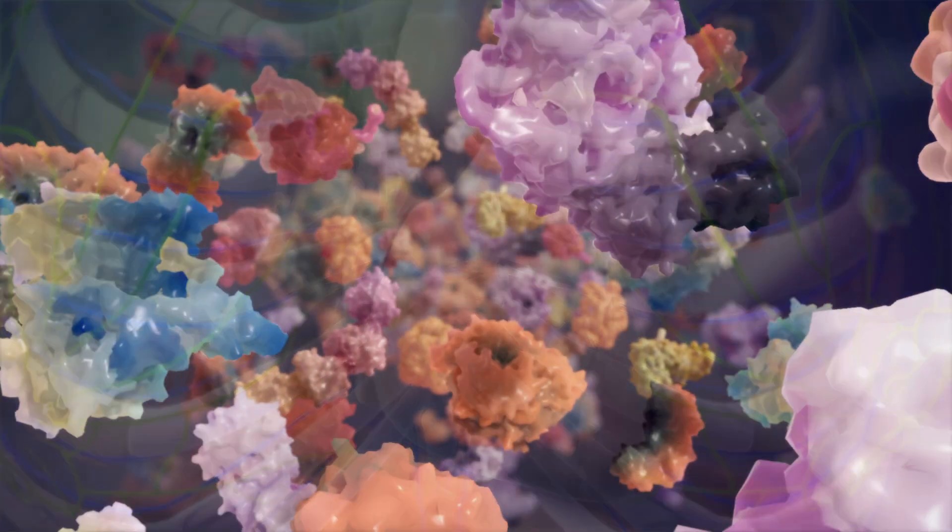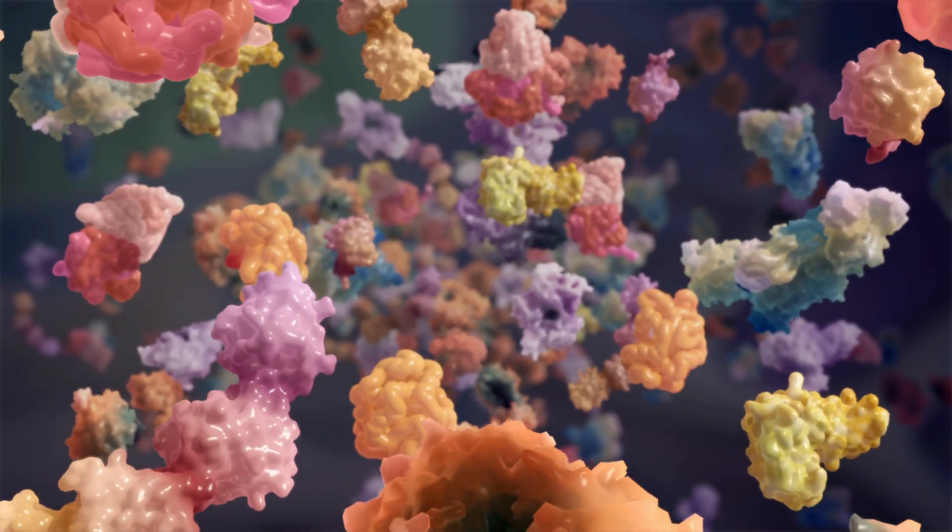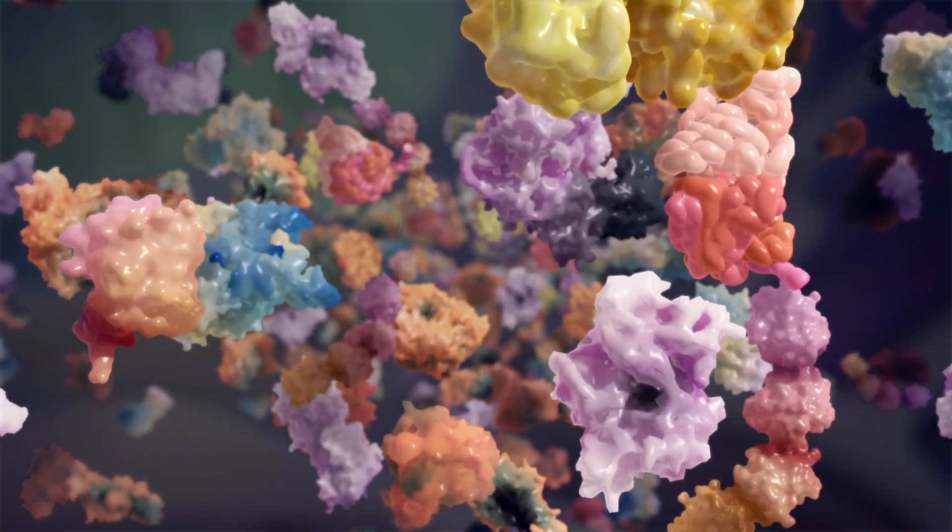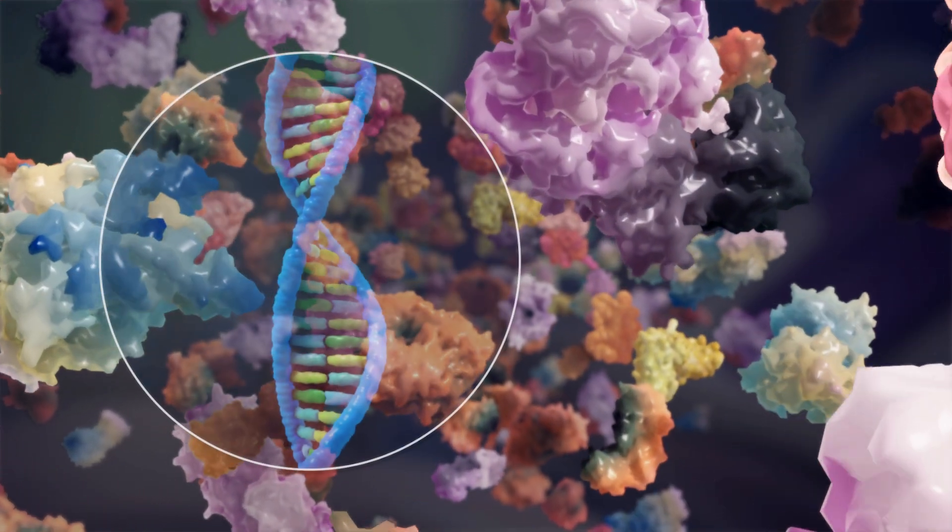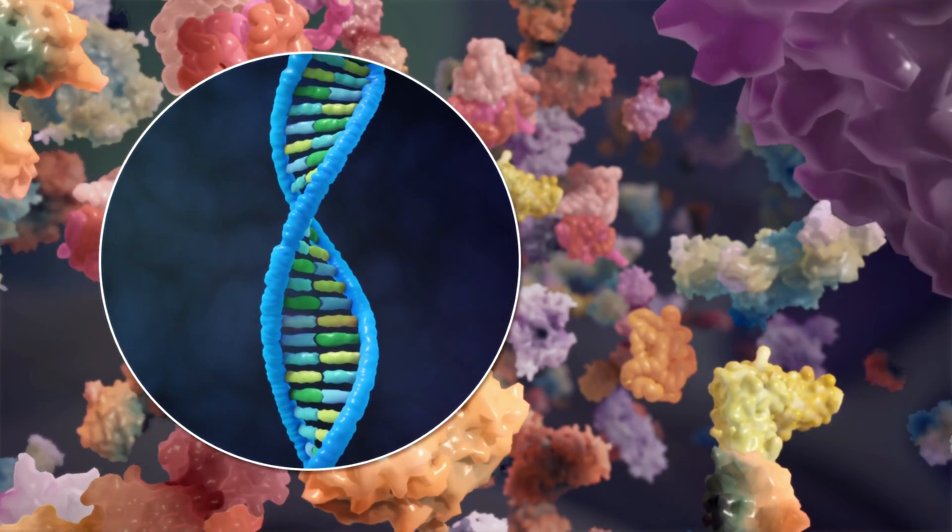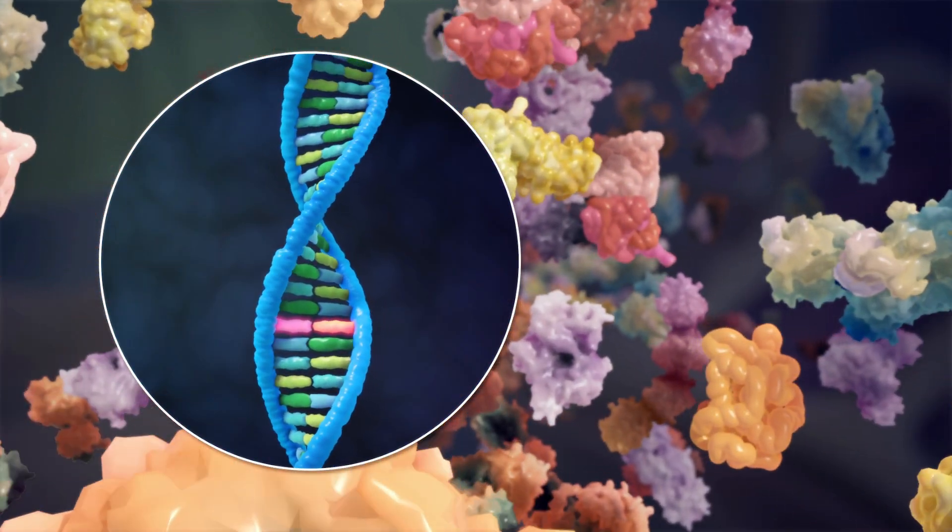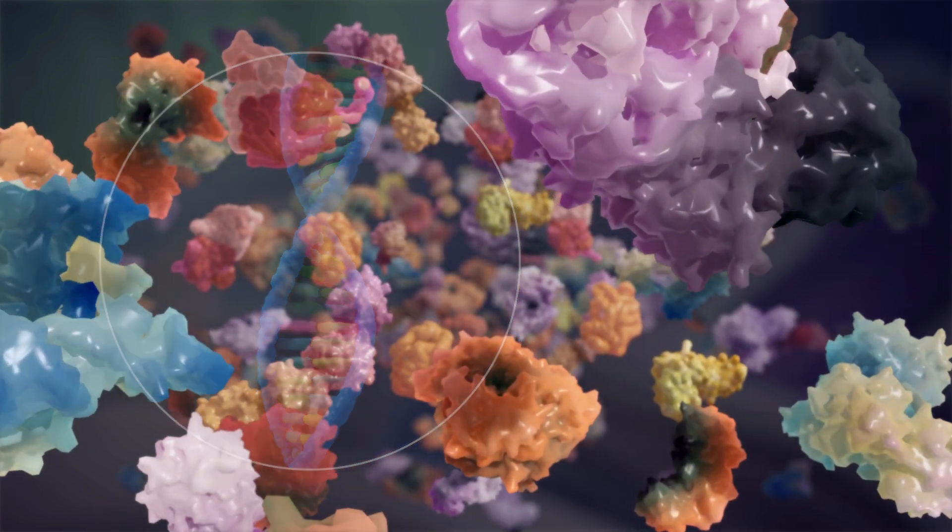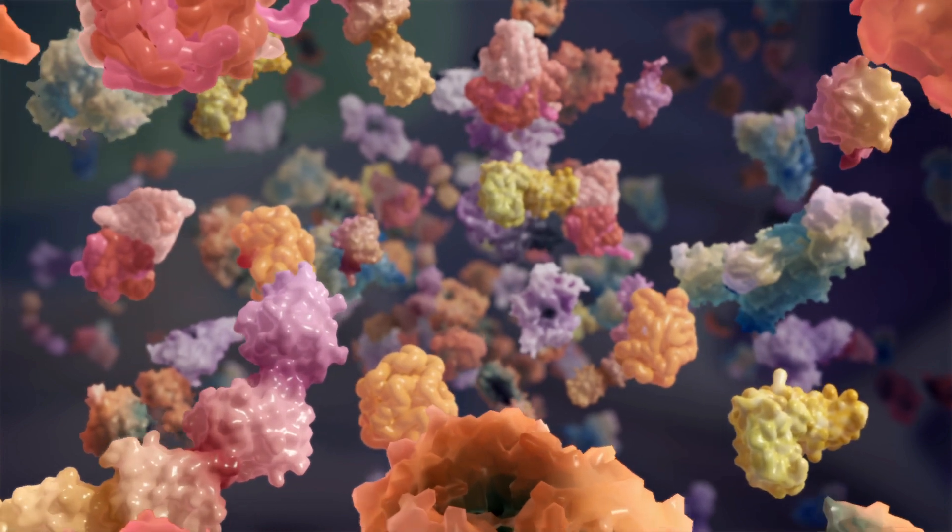More than 30 different proteins are known to misfold and form amyloid, meaning that over 30 different types of amyloidosis exist. Some proteins misfold because of a faulty gene we inherit from one of our parents, whereas others misfold because of factors we acquire during the course of our lives or as a result of aging.